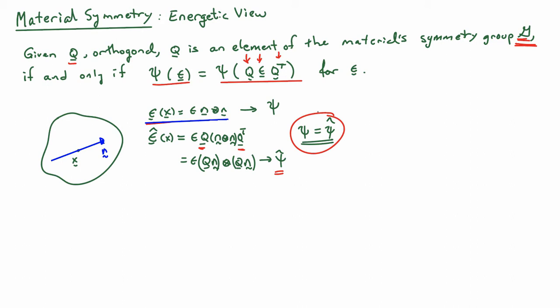Pictorially, what I have here is I'm applying the uniaxial strain in one direction, and now I apply it in a different direction. What I'm saying is that for elements of the material symmetry group, the free energy density that I'm going to get from uniaxial strain in the N direction and uniaxial strain in the QN direction, they're going to be the same.